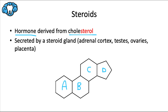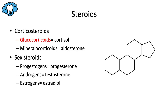Steroids are secreted by a steroid gland — this could be the adrenal cortex, testes, ovaries, or placenta. Corticosteroids are the first category, naturally produced by the body. 'Cortico' refers to the adrenal cortex, where they're secreted from. First, we have glucocorticosteroids — or glucocorticoids — the main one being cortisol, which suppresses the immune system. Cortisone and prednisone are synthetic forms used as anti-inflammatory agents or immunosuppressants for swelling, rashes, asthma, or chronic bronchitis. Others include triamcinolone and dexamethasone. The mineralocorticoid aldosterone regulates blood pressure through salt and water balance.